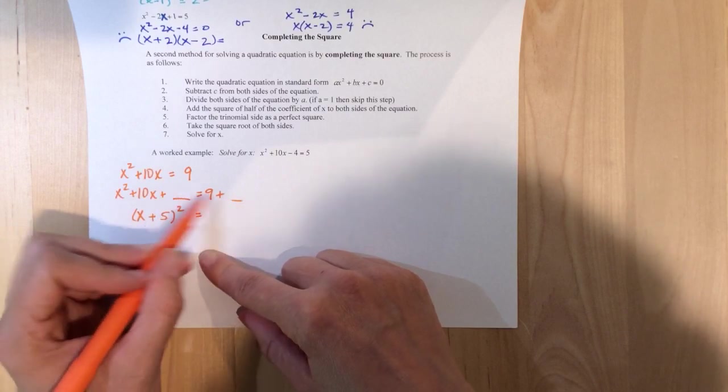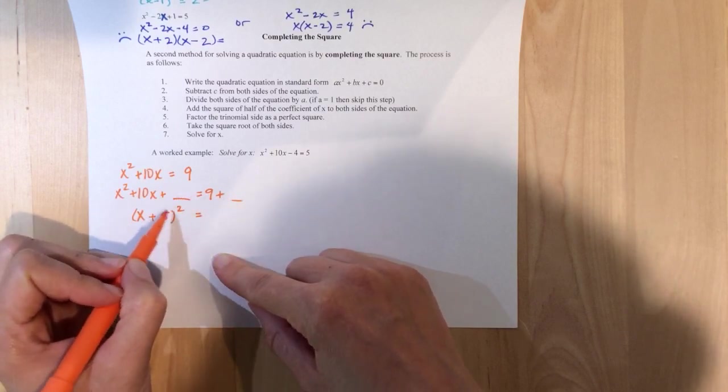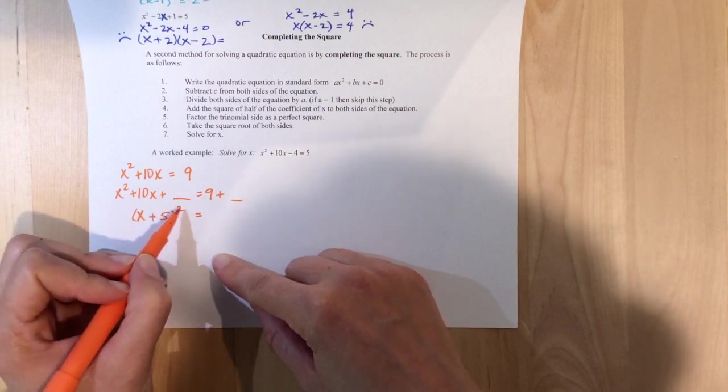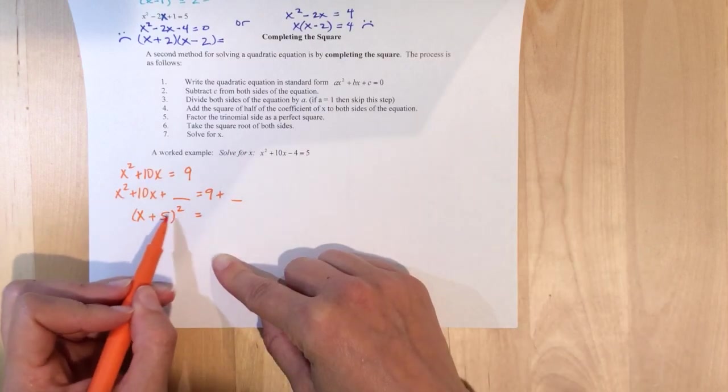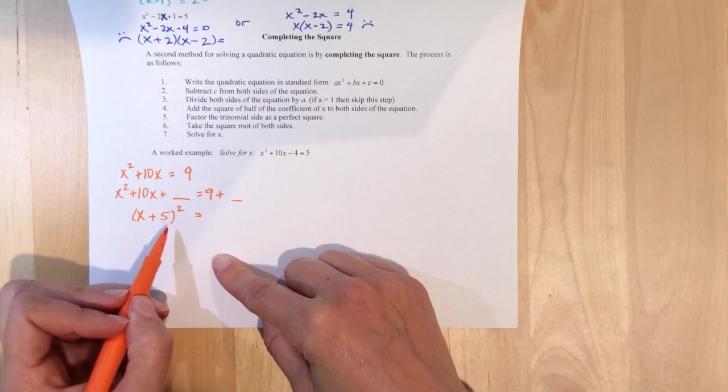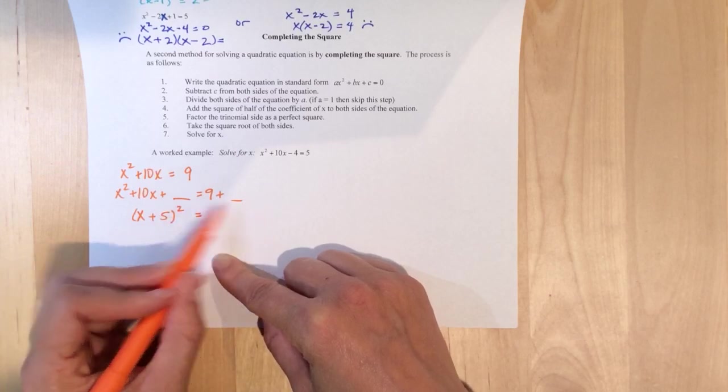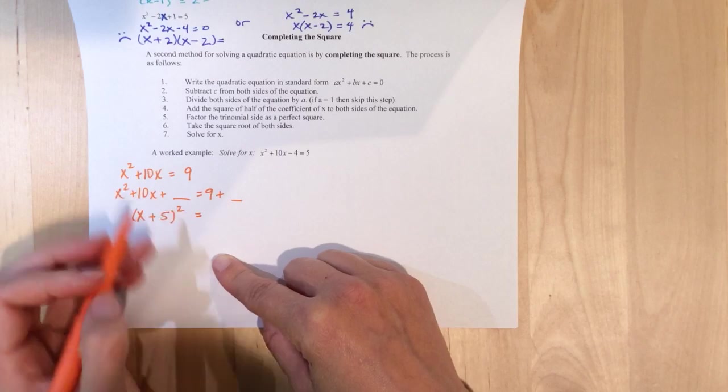Now, to get the blanks, you take this number, the 5, and you square it. But here, this thing squared helps me remind myself, helps me remember what goes in the blanks. But it's 5 squared, or this number squared. So, 25 and 25 go here.